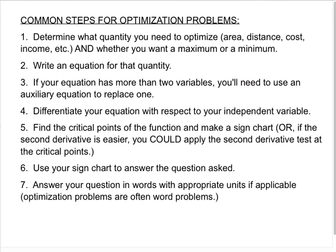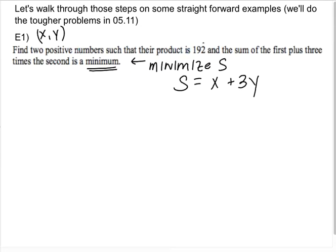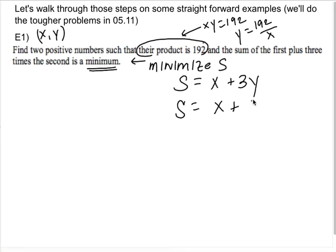So I want to minimize S. But if you notice, I said that if your equation has more than two variables, you're going to need some auxiliary equation to get rid of one of them. Conveniently, I have an auxiliary equation. I was told that the product of these numbers is 192. So X times Y is 192, meaning I could replace Y with 192 over X. So the thing I want to minimize is S = X + 3(192/X). This is the thing I want to minimize. If you want to rewrite this, that would be X + 576X^-1.